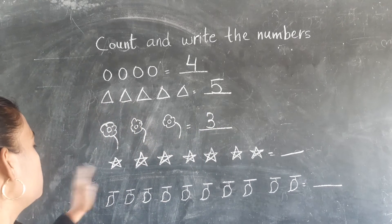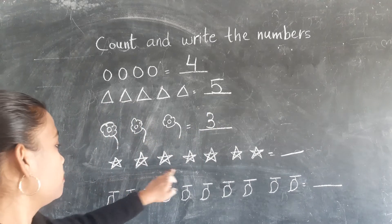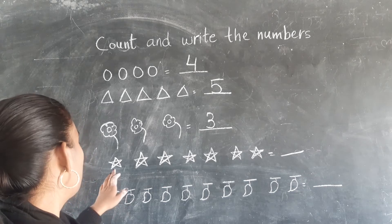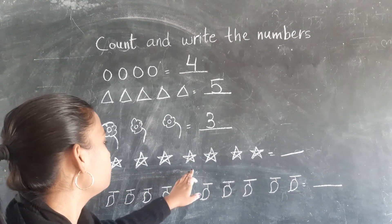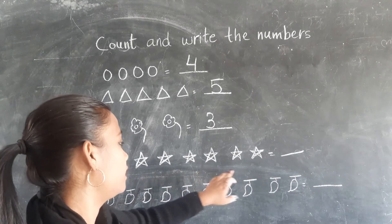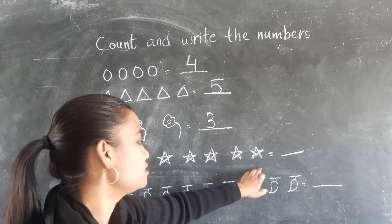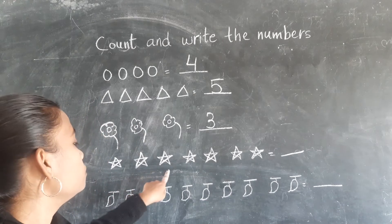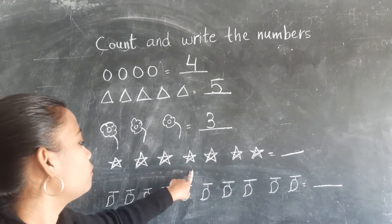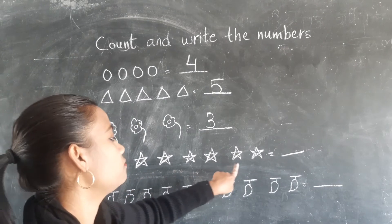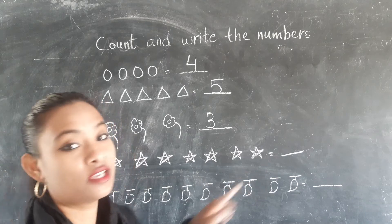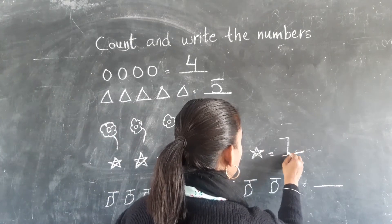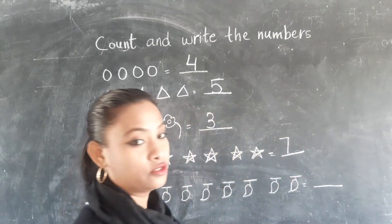1, 2, 3, 4, 5, 6, 7. Again, 1, 2, 3, 4, 5, 6, 7. Yes? So you have to write here, 7. Alright?